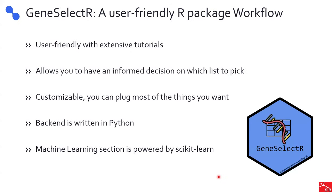We had this exact problem on a quite regular basis, and to combat this we came up with this package called GeneSelector, which has some different features. It's very user-friendly, has extensive tutorials and documentation, and the main idea is that it serves as your guide in this process. By applying the metrics I will shortly speak about, you can have an informed decision on which list to pick. It's quite customizable — you can plug in most things compatible with the scikit-learn library — and the backend is entirely written in Python, bridging the gap between Python for machine learning and R for bioinformatics analysis.